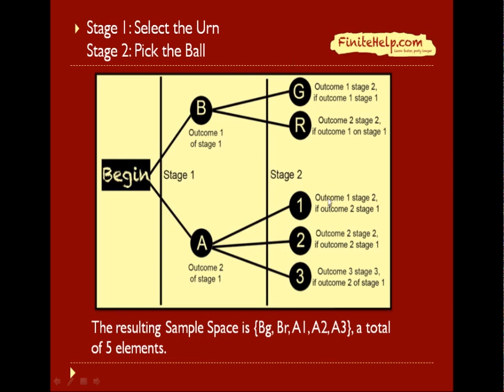From this tree diagram, you're going to be able to figure out the sample space, which contains five elements for our example: urn B green ball, urn B red ball, urn A ball 1, urn A ball 2, and urn A ball 3. So here you have B green, B red, A1, A2, and A3 for a total of five elements in the sample space.